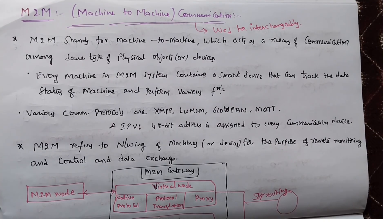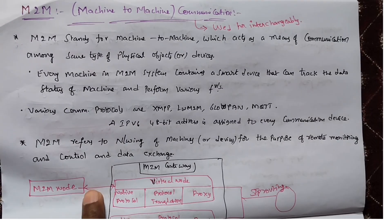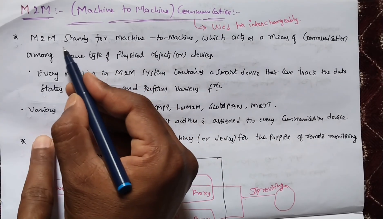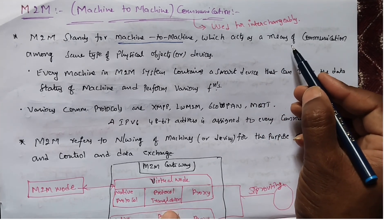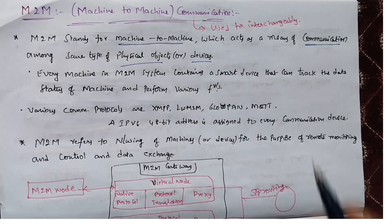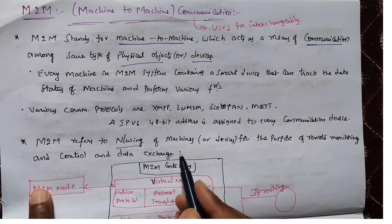Good morning everyone, welcome to my YouTube channel Concept Clear. In today's class we discuss about machine-to-machine communication in the subject of Fundamentals of IoT. M2M stands for machine-to-machine communication, which acts as a means of communication among physical objects or devices. The communication between one device to another device is called M2M.